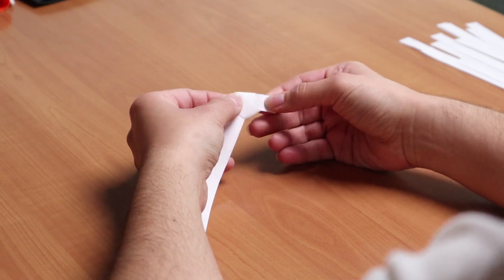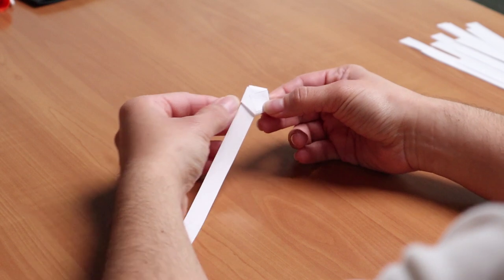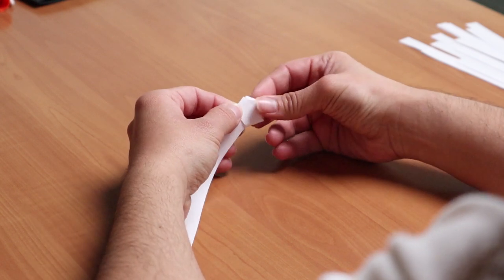Step three, fold the end of the strip down and tuck it into a knot. You can cut a bit off if it is too long.